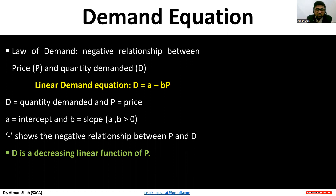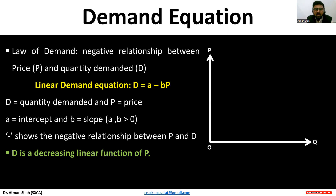We are analyzing the linear association between price and quantity demanded. This is the demand curve DD, which is downward sloping, indicating the inverse relationship between price and quantity demanded.